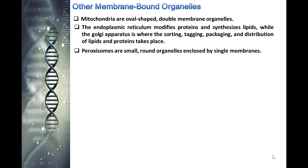Peroxisomes are small round organelles enclosed by a single membrane. They carry out oxidation reactions and break down fatty acids and amino acids. Vesicles and vacuoles are membrane-bound sacks that function in storage and transport. All these organelles are found in each and every eukaryotic cell.